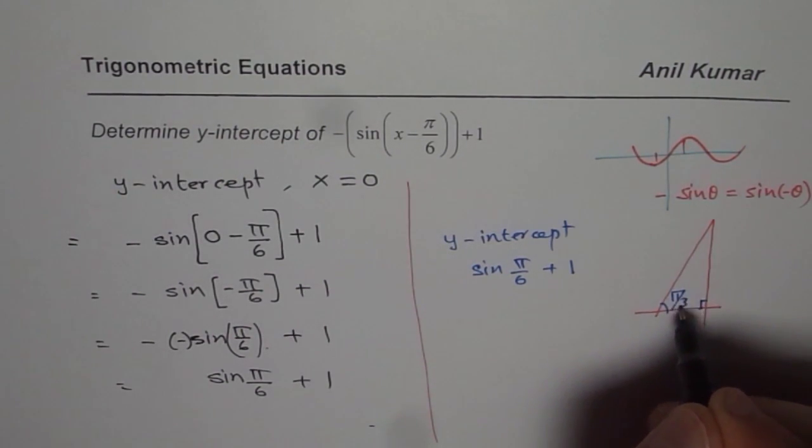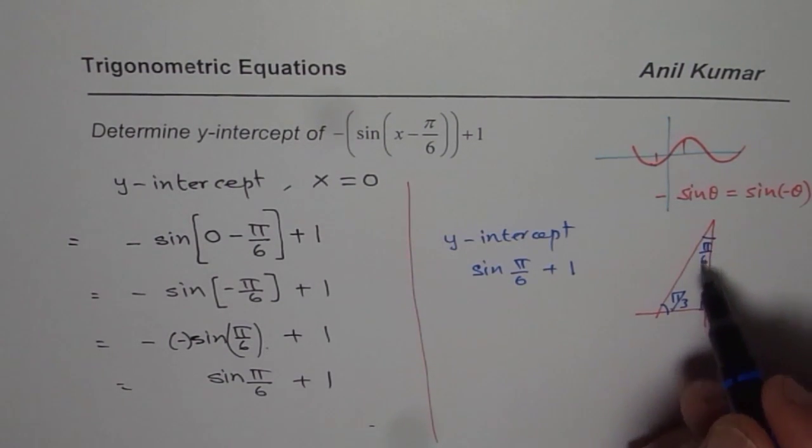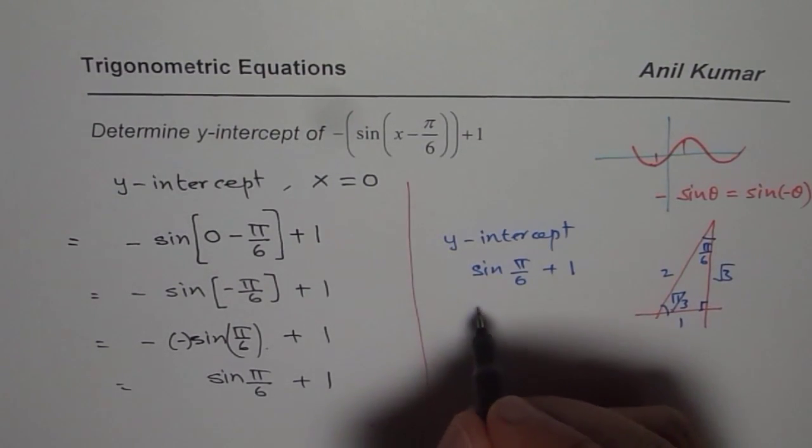That is π/3, this is π/6. So for π/6, the opposite side is 1, hypotenuse is 2, and this is square root 3. So that one is half for us.